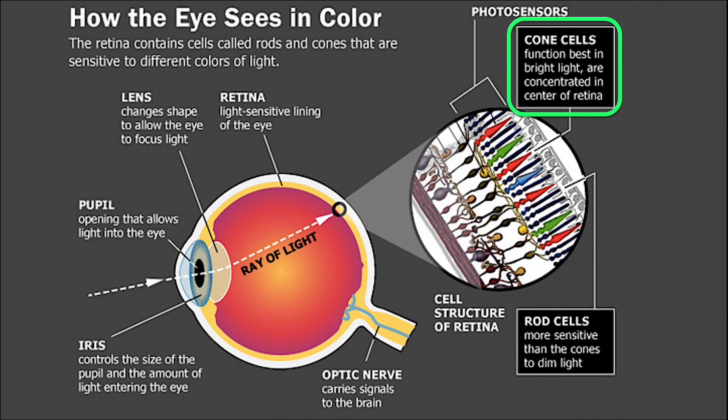The cones function best in bright light and are the ones responsible for our color vision. Cone cells only come in blue-sensitive, red-sensitive, and green-sensitive varieties, meaning that all the colors we have ever seen and will see are combinations of red, green, and blue light.